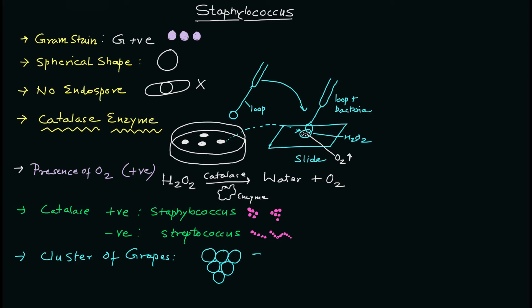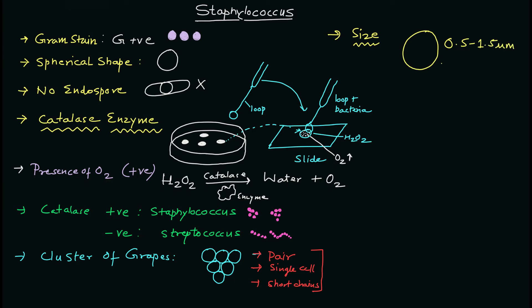In clinical samples you may see pairs, single cells, or short chains for this particular organism. Now talking about the size of this organism, one single cell will be approximately one micrometer in diameter, and the range is also noted.